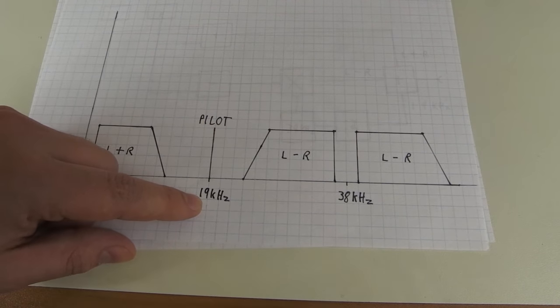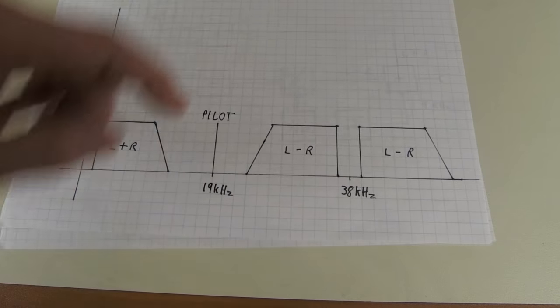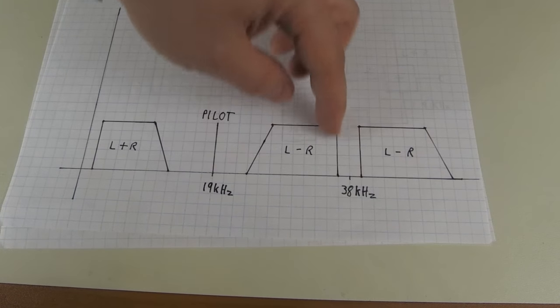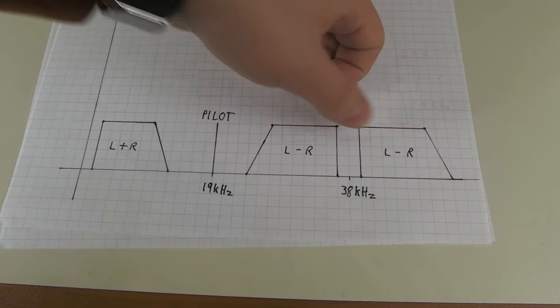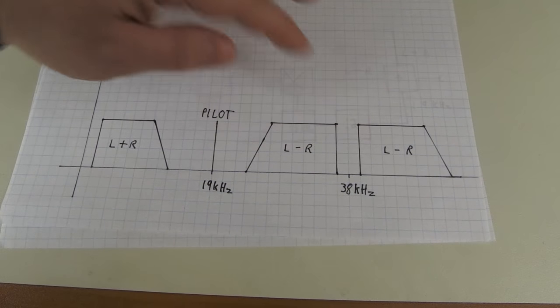And when it receives this, it internally doubles this 19 kilohertz signal. And up here is a double sideband signal that contains the left minus the right channel both in the upper and the lower sideband.